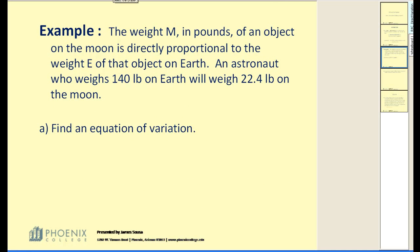I'm going to highlight some things as we read. The weight m in pounds of an object on the moon is directly proportional to the weight e of that object on earth. An astronaut who weighs 140 pounds on earth will weigh 22.4 pounds on the moon.